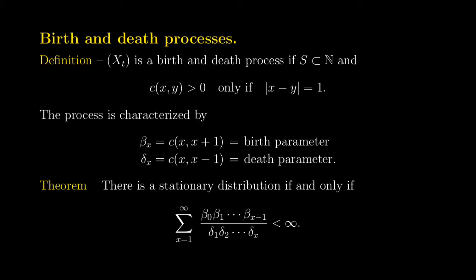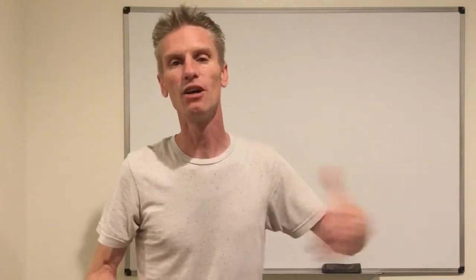In the queuing context, what we mean by a birth is a new individual entering the system, and what we mean by a death is an individual leaving the system. The main objective of this video is to prove the theorem at the bottom of the slide, which says that for birth and death processes there is a stationary distribution — meaning the process is positive recurrent — if and only if this infinite sum is finite. This result is very easy to prove, and in the next videos I'm going to look at many particular cases of birth and death processes.